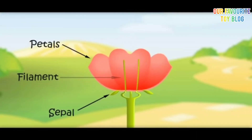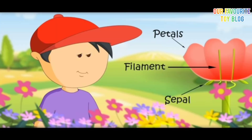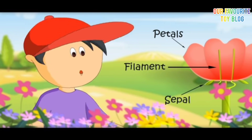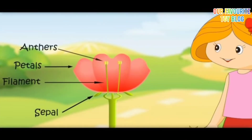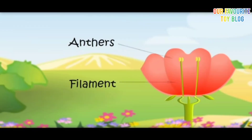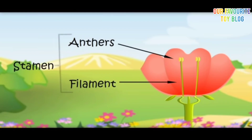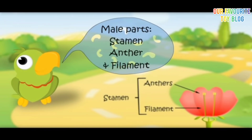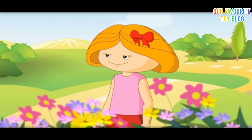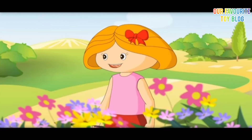Here come the filaments. Bring a few anthers too. These filaments and anthers are the male parts of the flower. Jointly these are called the stamen. Male parts — stamen. Anthers and filaments. Now come the female parts.